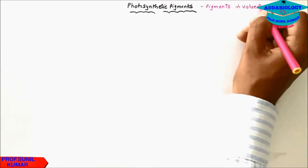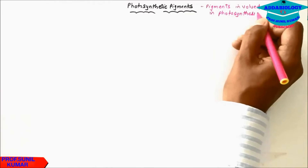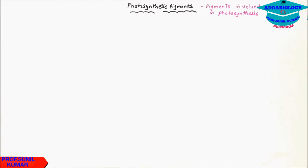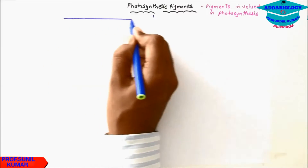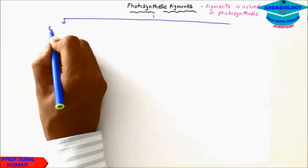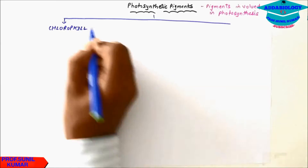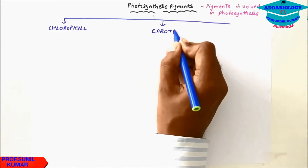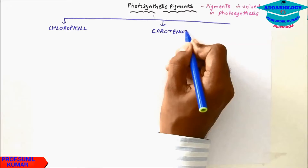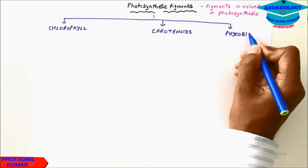We need to understand that photosynthetic pigments are basically of three types. The first type is chlorophyll, the second type is carotenoids, and the third type is phycobilins.